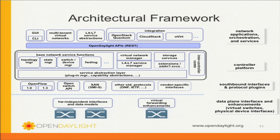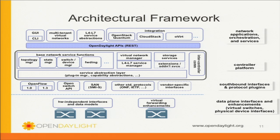Here's a tighter view of the architectural framework. Across the top layer you can see the different types of northbound applications we're expecting to be part of the integration effort — cloud platforms such as OpenStack and CloudStack, Level 4 through 7 services, and a classic GUI. In the middle are the different types of base services: topology manager, statistics manager, switch and device manager, as well as least-path forwarding. There are also extended services as part of this first release — virtual network overlays, traffic redirection, storage services, and so forth — and a variety of southbound protocols underneath the controller.